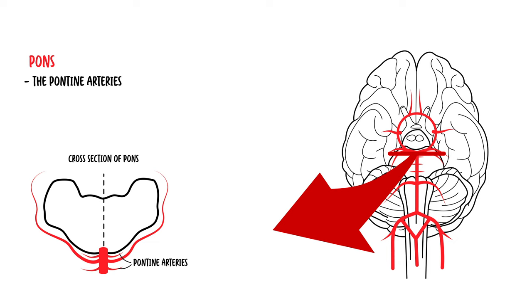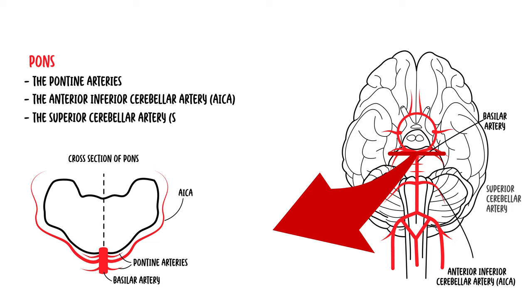Majority of the vascular supply of the pons is supplied by the pontine arteries, which are branches of the basilar artery. A smaller part comes from the anterior inferior cerebellar artery and the superior cerebellar artery.